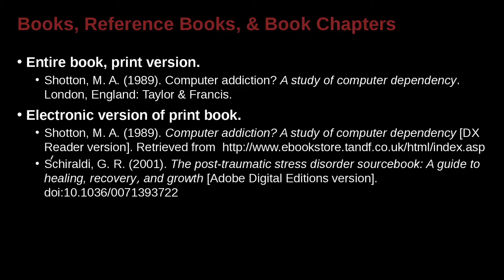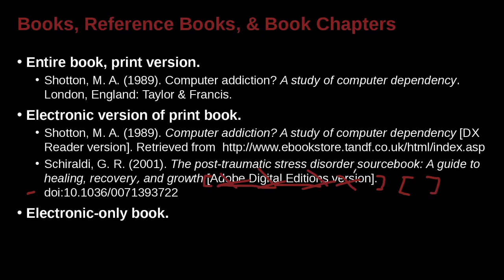Let's look at another example. Chiraldi is the last name, then the first name, middle name, and year. The title is 'The Post-Traumatic Stress Disorder Source Book,' and again we have a colon inside the book name — we copy it from the book, we don't make that up. Here we have the brackets again. What are they for? Giving us some special information. In this case, the information is 'Adobe Digital Editions version.' This is just to help users see exactly where you got it from. Then here's the DOI. You don't have to include the Adobe Digital Editions version — nobody says you have to have it. This is extra. That's what the brackets are for — extra information to help the reader find exactly what version of the book you had.